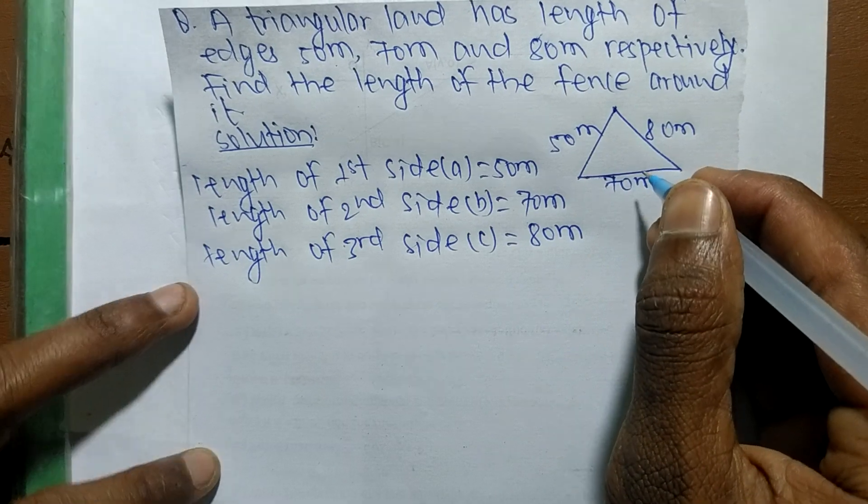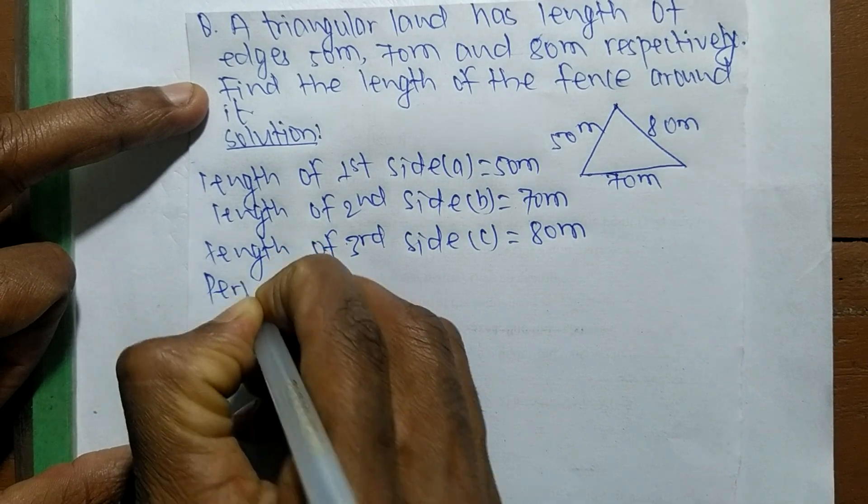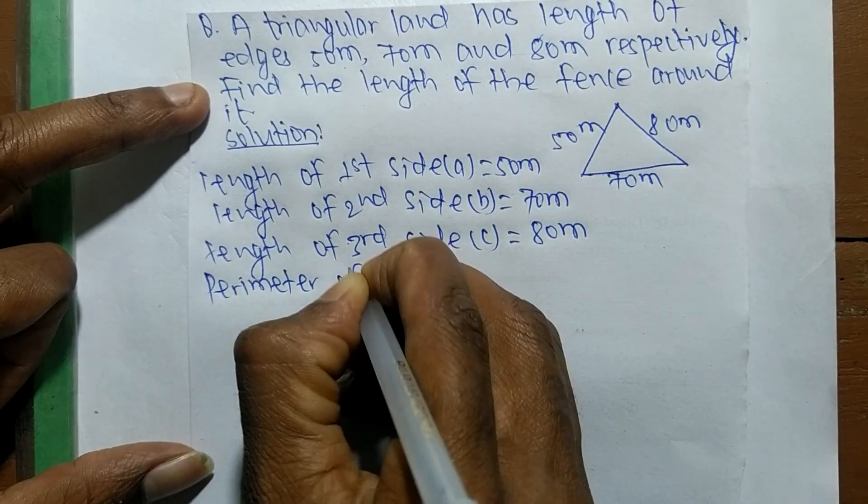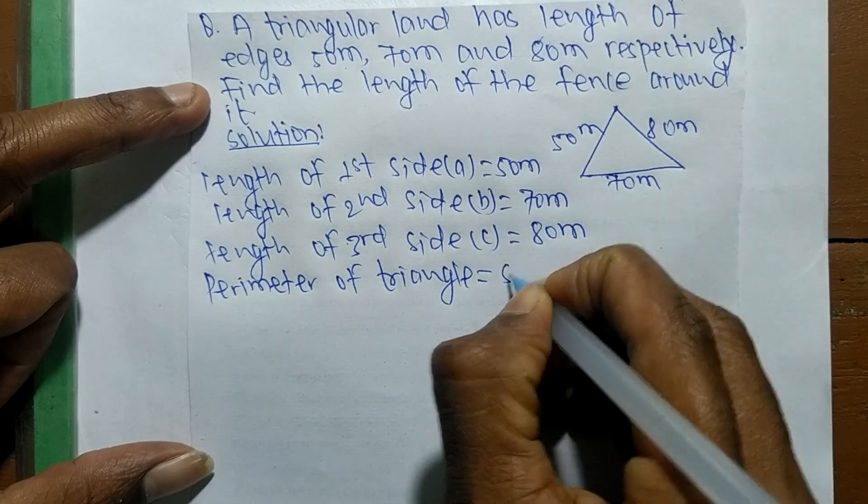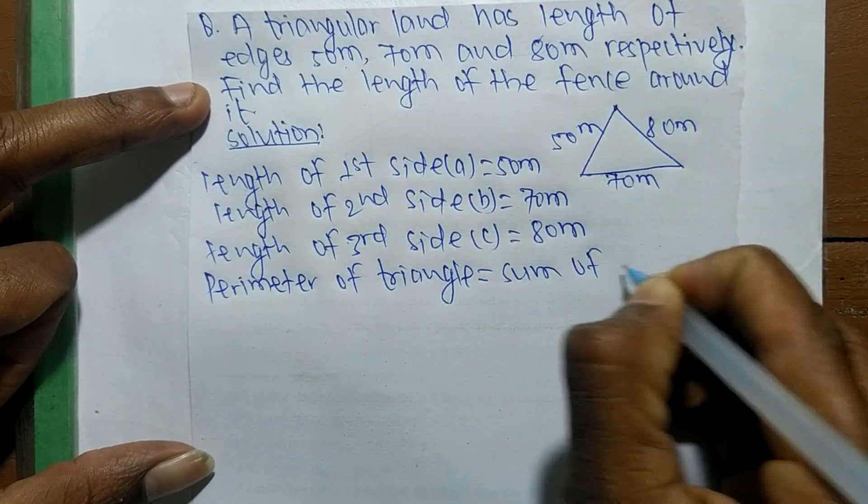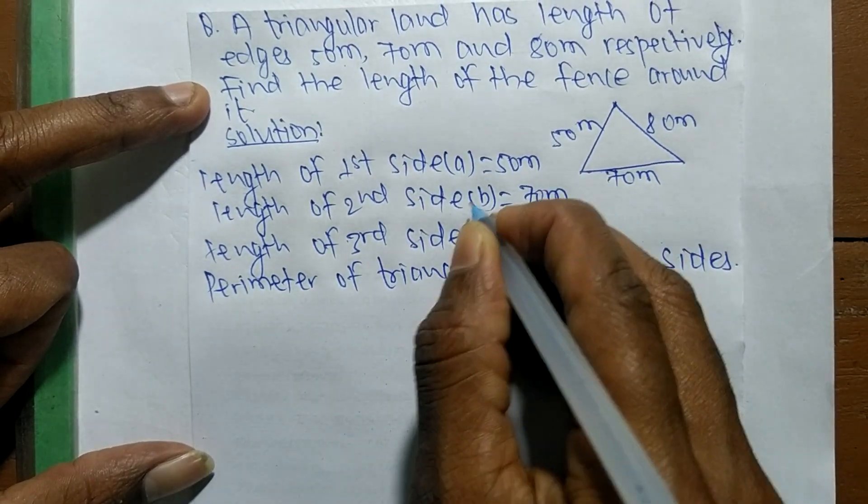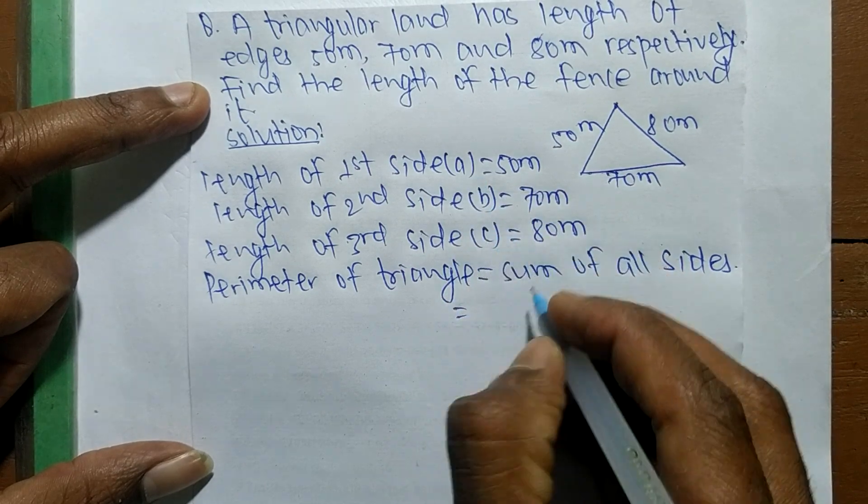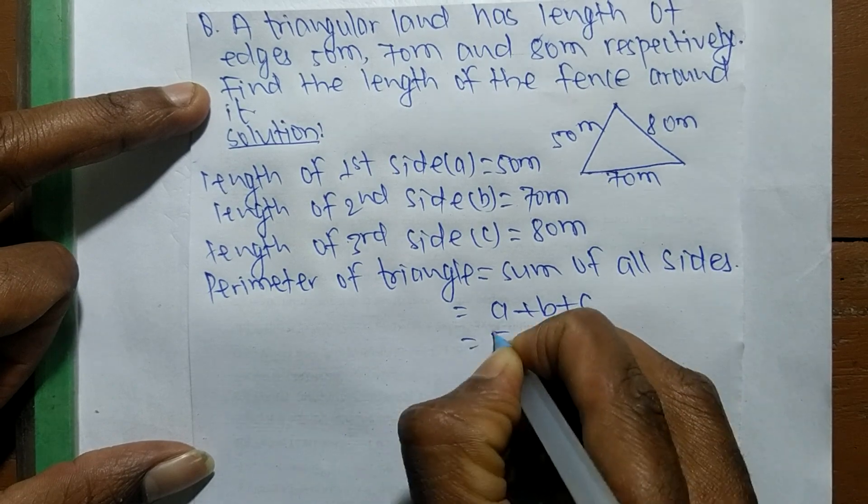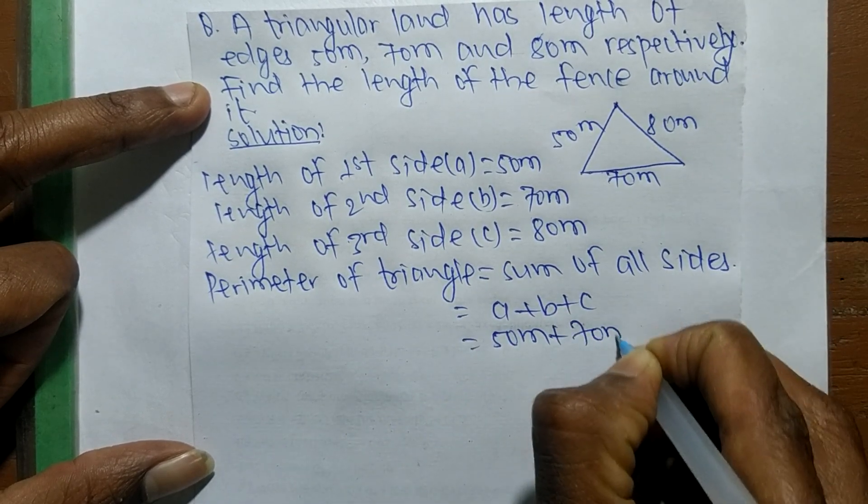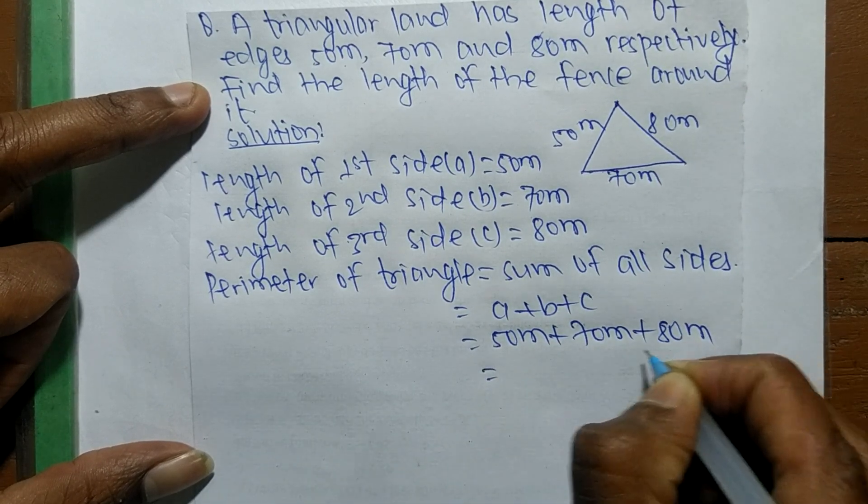We have to find the perimeter of the triangle. Perimeter of triangle is equal to sum of all sides, which are a, b and c, so it equals a + b + c. With a = 50 meter, b = 70 meter, and c = 80 meter, adding all these